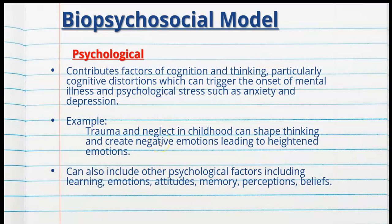Other psychological factors include learning, emotions, attitudes, memory, perception and beliefs. Learning is a universal process, but the rate and way in which we learn differs among individuals. Emotions are universal but how deeply we feel or display them varies. Our attitudes towards certain people, groups and topics are universal but whether they're positive, negative, neutral or ambivalent differs based on our experiences.